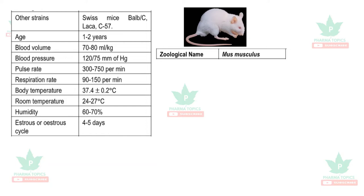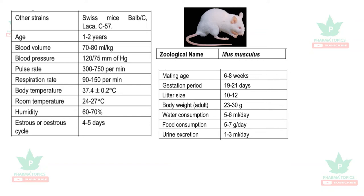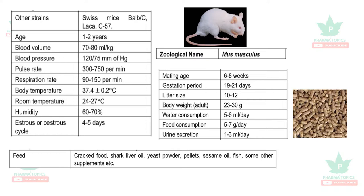The body temperature of mice is 37.4°C, compared to the human value of 37.5°C. The estrus cycle is four to five days, whereas in humans it is 21 days. The mating age is 6 to 8 weeks, gestation period is 19 to 21 days, and litter size is 10 to 12. Body weight is 25 to 30 grams, water consumption is 5 to 6 ml per day, food consumption is 5 to 7 grams per day, and urine excretion is 1 to 3 ml per day. The feed is a pellet diet containing shark liver oil, yeast powder, sesame oil, fish, and other supplements.